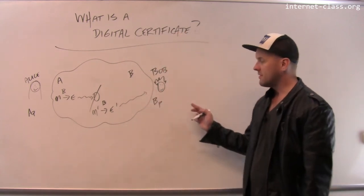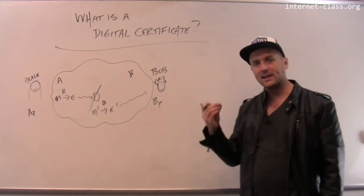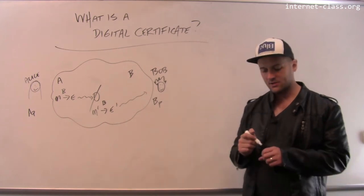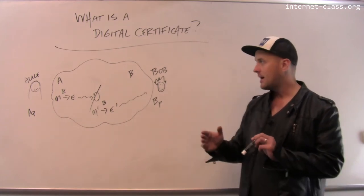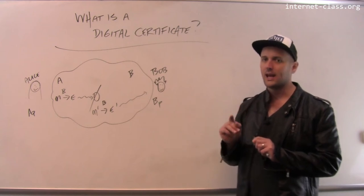So when Bob received the message, he'll decrypt it, but there's this second question that we have to deal with: how does Bob know that a message came from Alice?